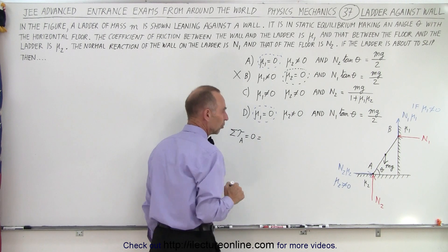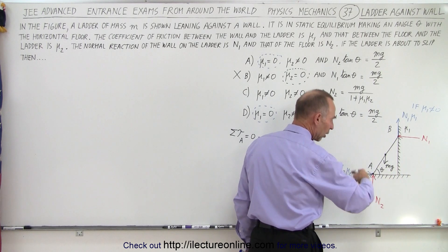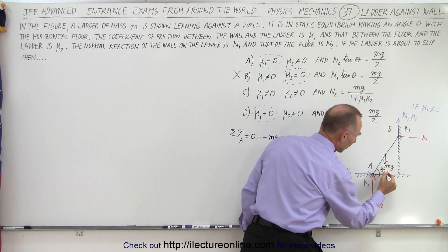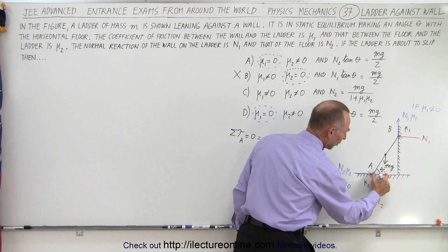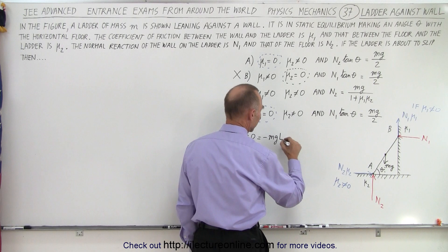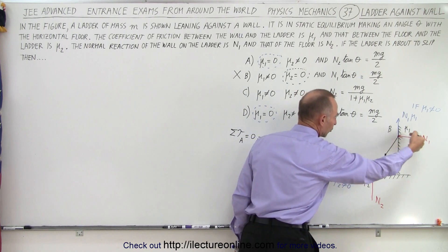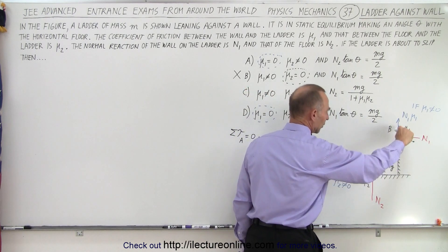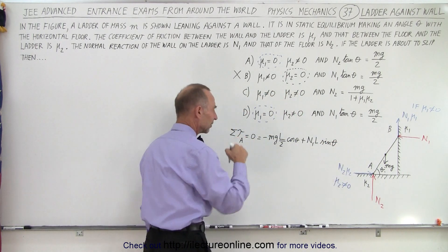Let's call the bottom of the ladder point A and the top point B. At the middle of the ladder, that's where the center of mass is, so the weight Mg acts there. The sum of all torques about point A equals 0. The weight Mg gives a clockwise (negative) torque, so it's negative Mg times the moment arm, which is L over 2 times cosine theta. The normal force N1 from the wall gives a counterclockwise torque, so that's plus N1 times L times sine theta. Together these add up to 0.